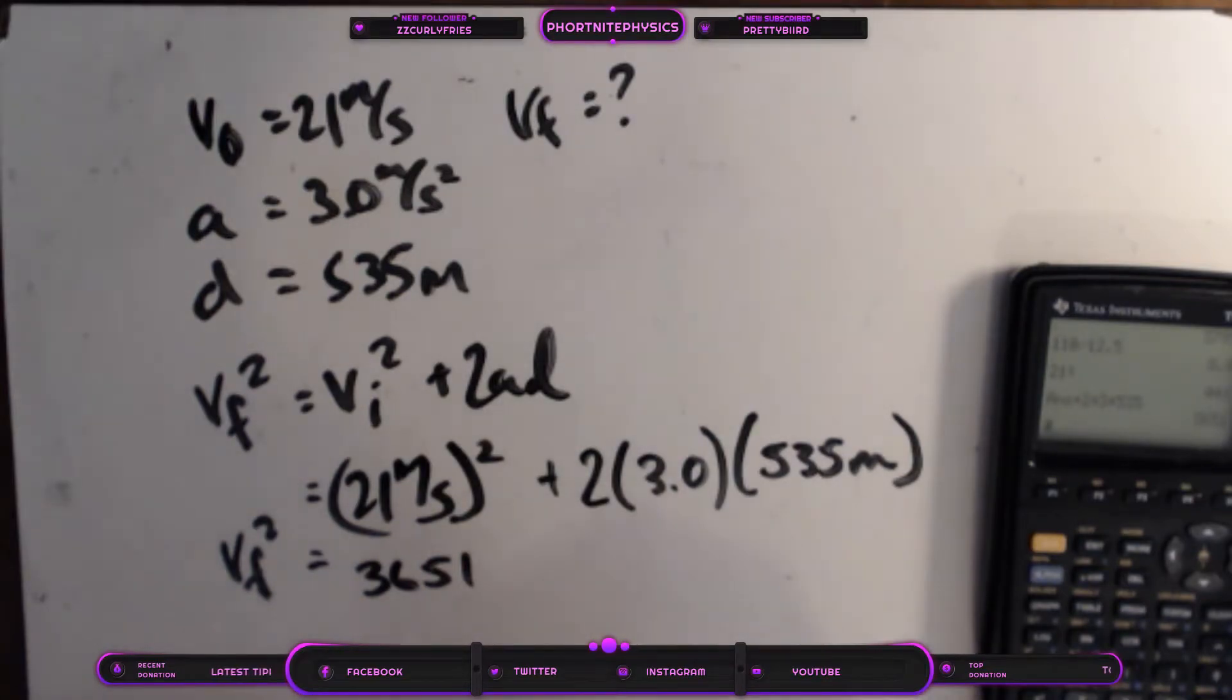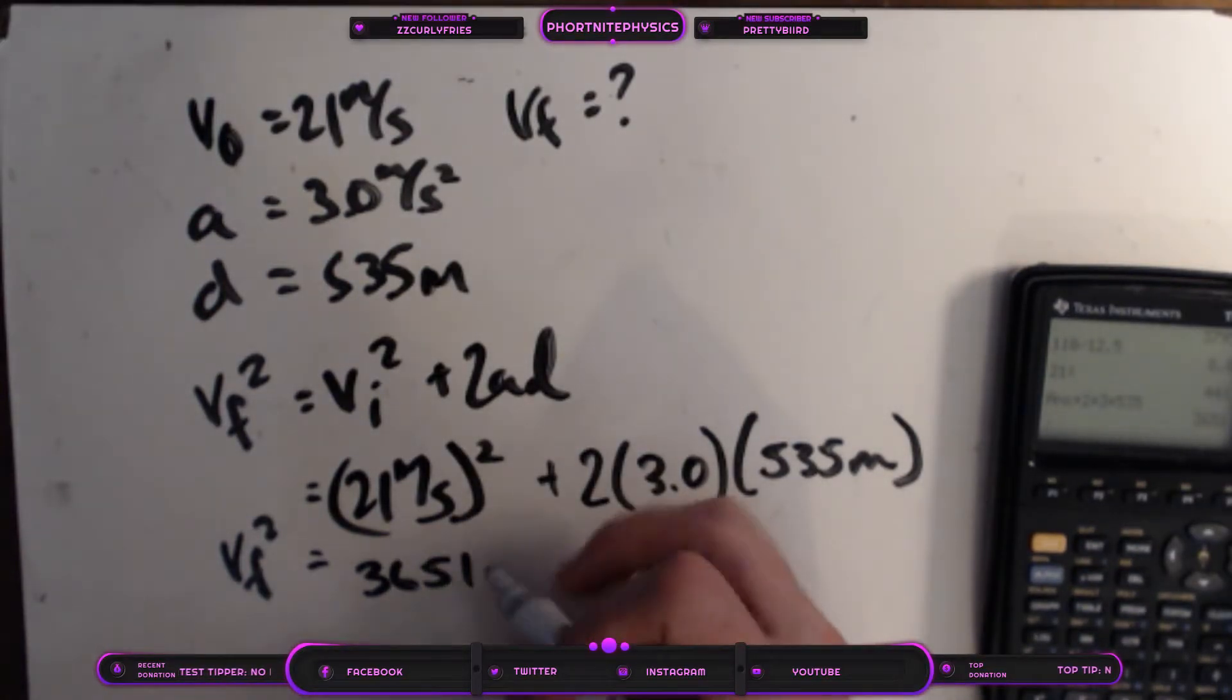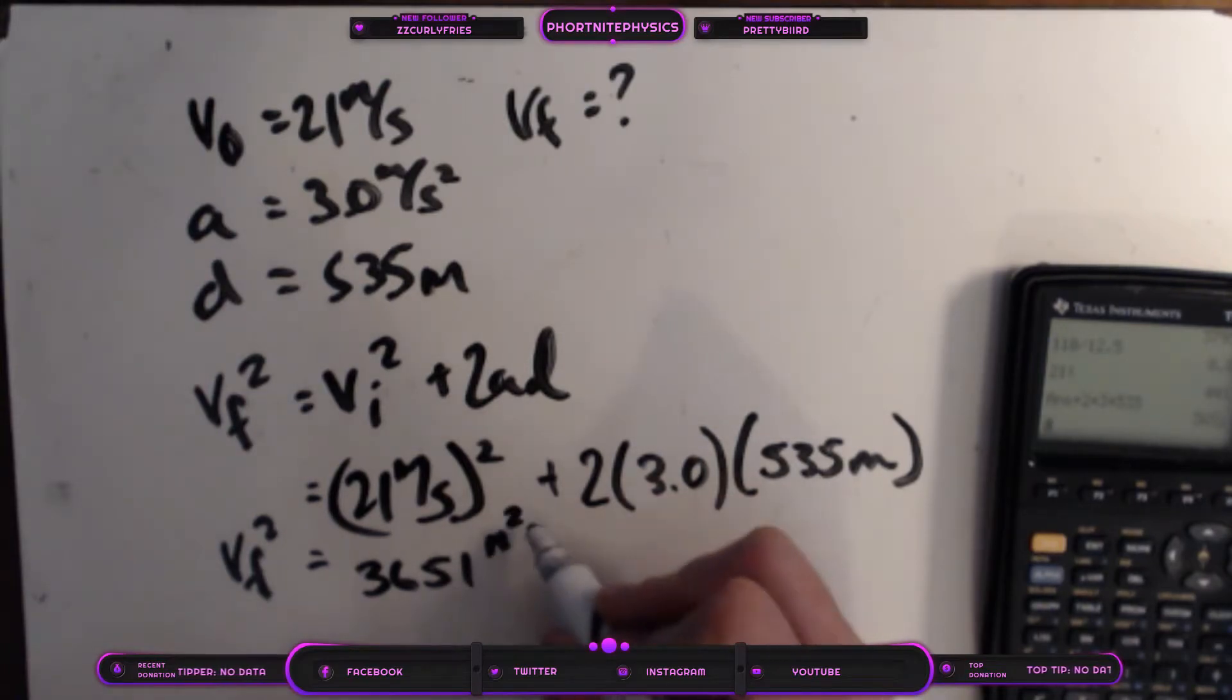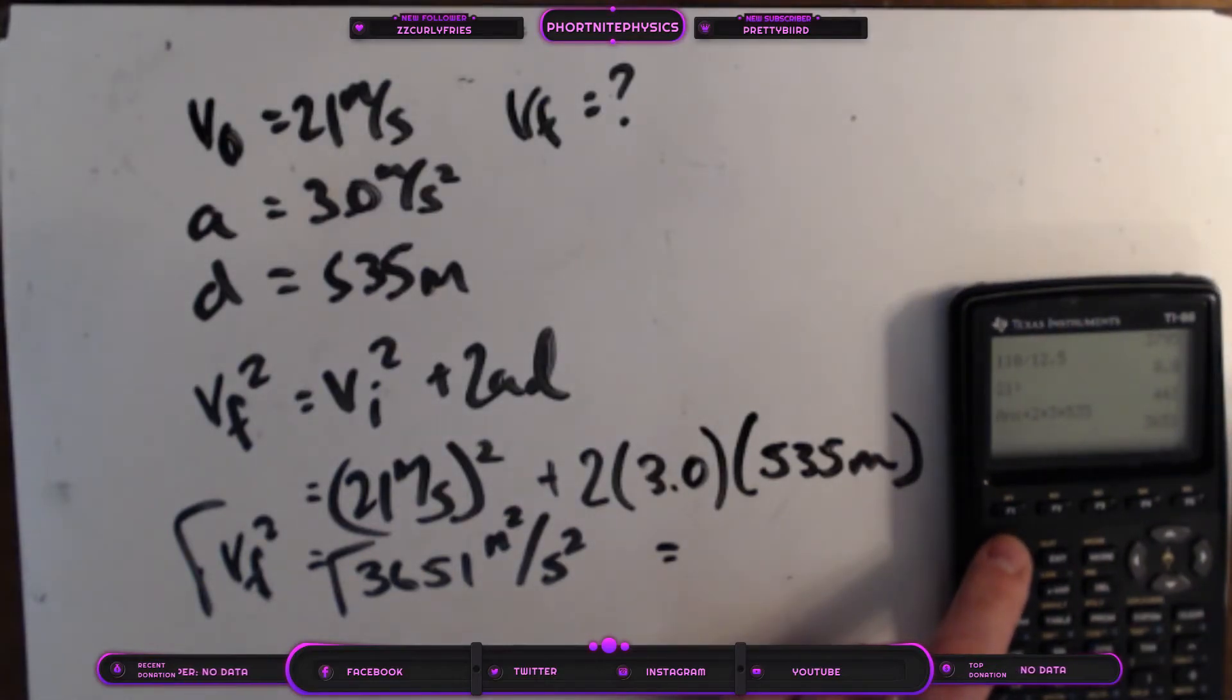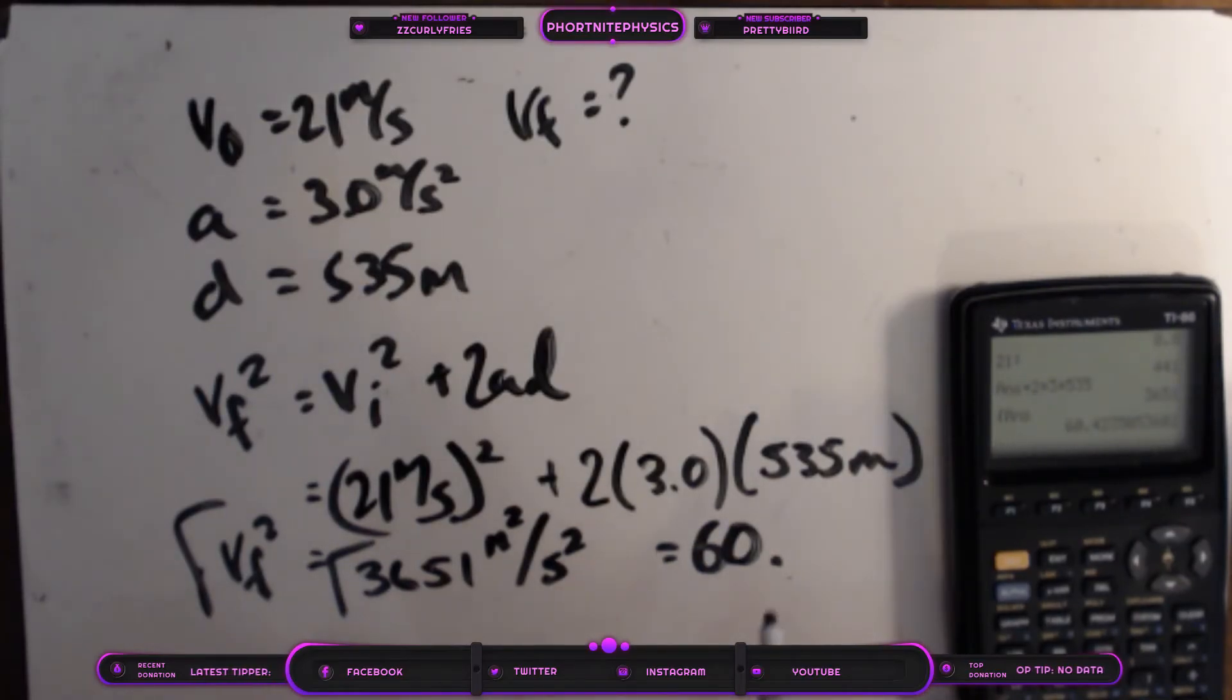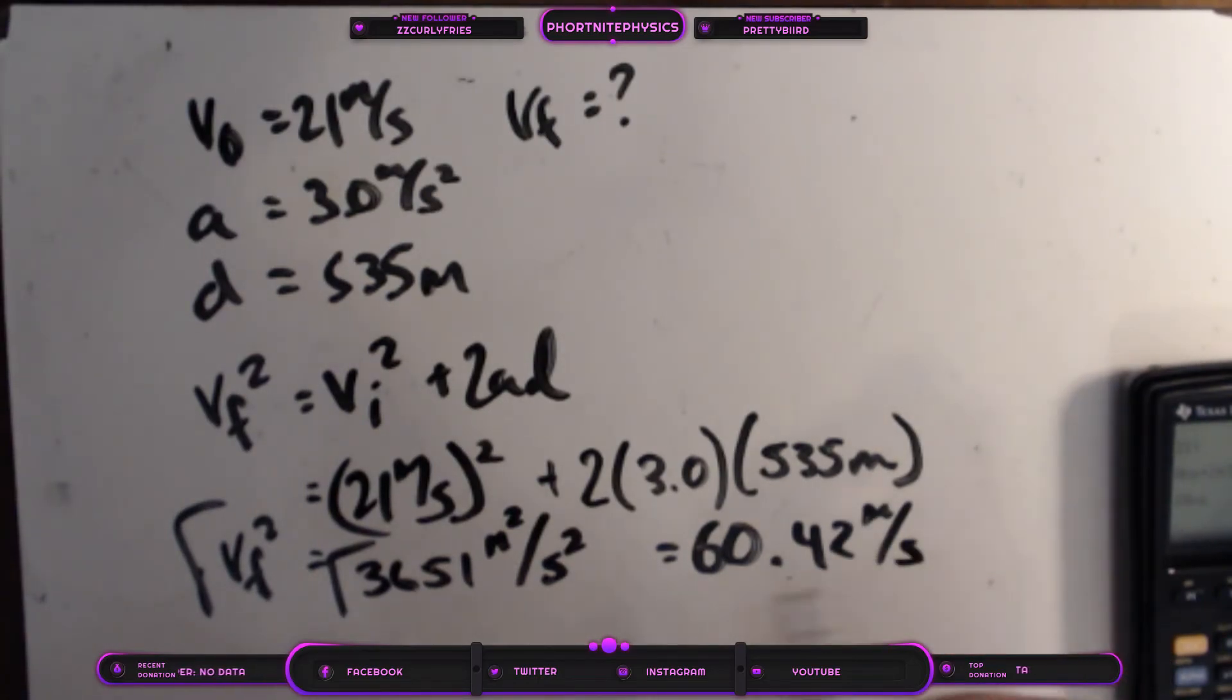So our final velocity squared is equal to 3651, and if you're tracking your units, it's meters squared per second squared. So we need to square root both these things so we end up with the units of meters per second, okay? Now let's go ahead and do that. Let's just hit square root of our answer, and that gives us 60.42 meters per second.